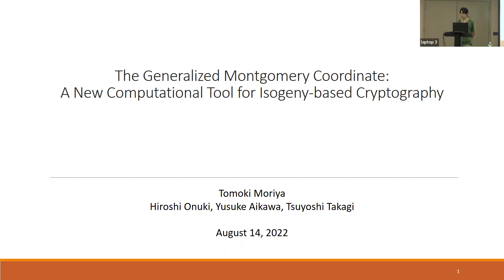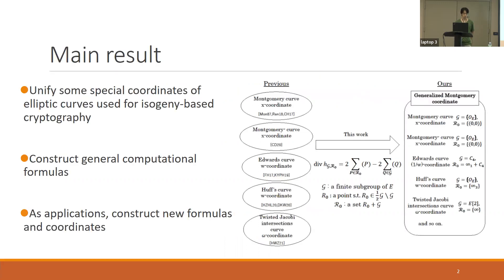Thank you for introducing me. First I explain the main results of our study. We propose a new concept, the generalized Montgomery coordinate, that unifies some special coordinates of fd-curves used for isogeny-based cryptography.